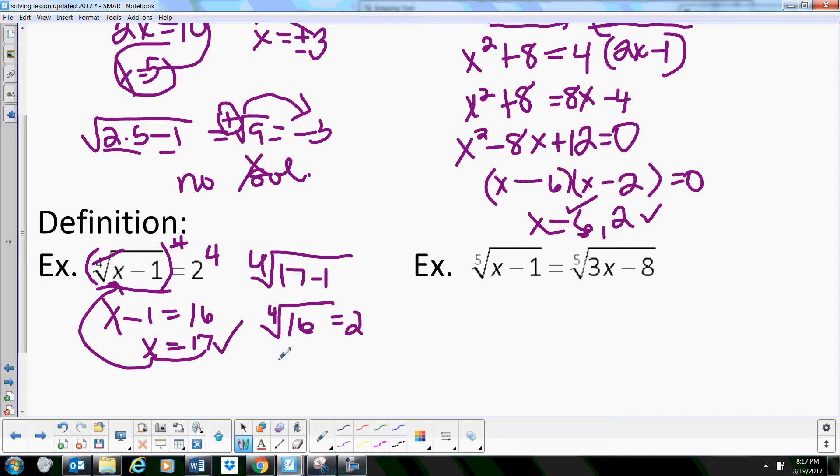Now let's look at one with a fifth root and this one actually has radicals on both sides. So we've got a fifth root so we're going to raise both sides to the fifth power.